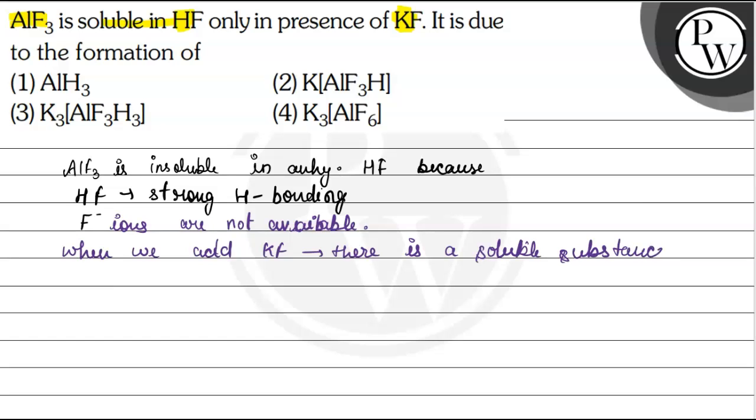Now let's see the reaction. So basically when AlF₃ is mixed with KF, then there is a substance formed which is called K₃AlF₆. And this is the soluble substance.